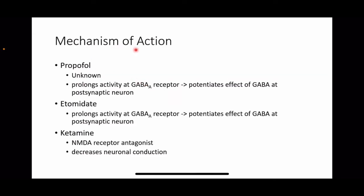Let us see about the mechanism of action of these drugs. The exact mechanism of action of propofol is unknown. It is thought to prolong activity at the GABA-A receptor, thereby potentiating the effect of GABA at the postsynaptic neuron. Etomidate also prolongs activity at the GABA-A receptor and potentiates the effect of GABA at the postsynaptic neuron. Ketamine is an NMDA receptor antagonist, which decreases neuronal conduction.